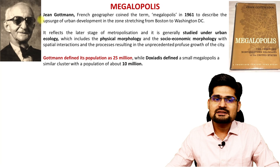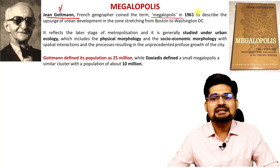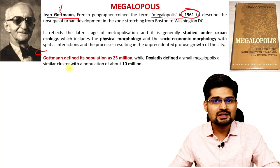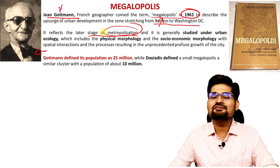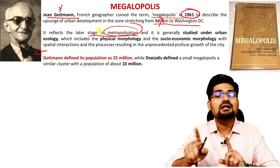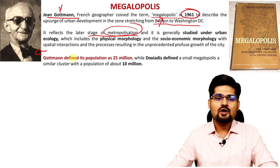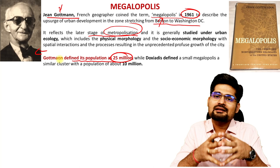The concept of megalopolis was given by John Gottman, a French geographer, who coined the word in 1961. He was influenced by Patrick Geddes' 1915 work and studied the Boston–Washington DC region. Megalopolis reflects a later stage of metropolization and was studied through urban ecology — how people behave socio-economically beyond just physical urbanization. Gottman defined the population threshold for megalopolis as 25 million.